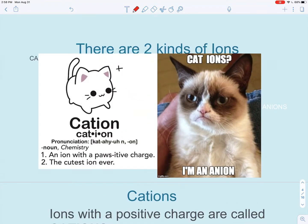There are two kinds of ions. You've got a cation, the cutest ion ever. So these are positive. And then you've got anions. As you can tell by this grumpy cat, these are kind of negative Nancy's. So let's jump into the differences between these two.